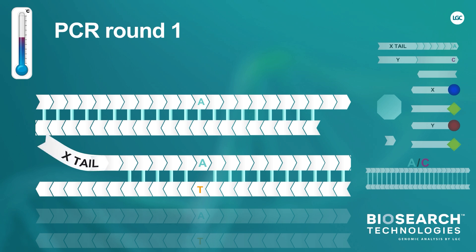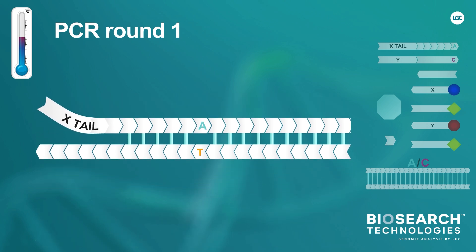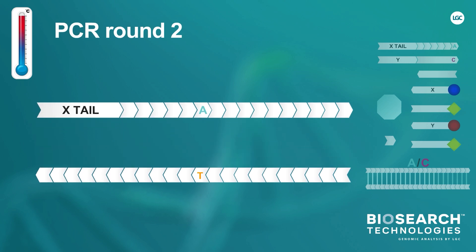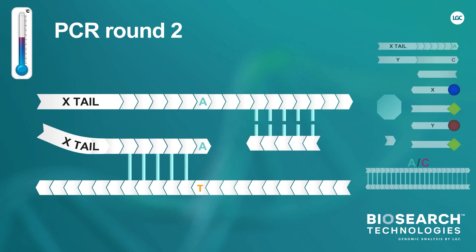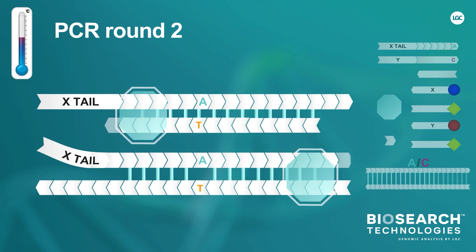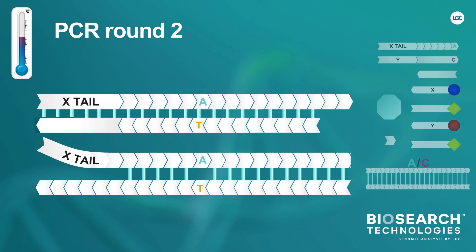This animation will now focus on the PCR product that has allele-specific tail sequence incorporated within it. CAASP PCR round 2 starts with the denaturation of double-stranded DNA. This DNA consists of both the original DNA template and the PCR products generated during PCR round 1. As with PCR round 1, step 2 includes both annealing and extension of the primers. It's during this second round of PCR that the complementary sequence to the allele-specific tail sequence is first generated. This will be referred to as the X complement.